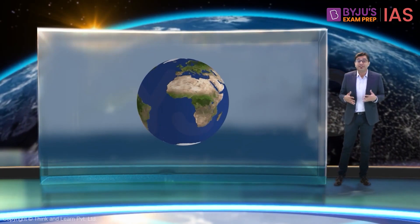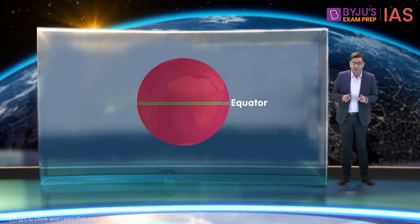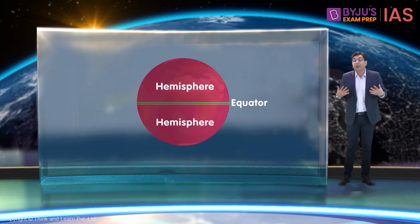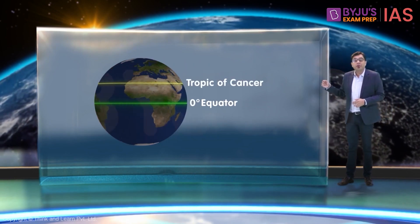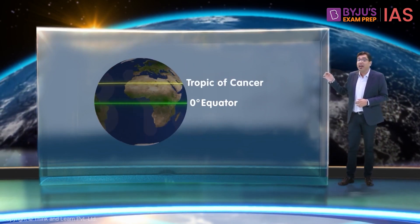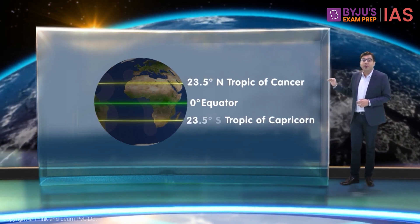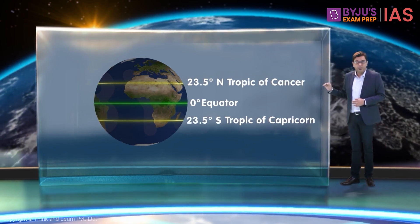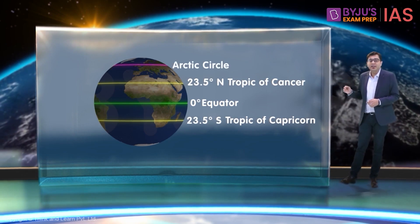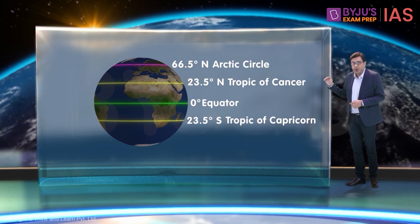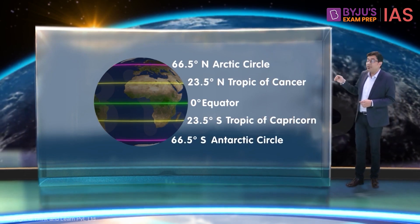There are a few significant latitudes. The equator divides the earth into two halves, each half called a hemisphere. We have two other parallels of latitudes: the Tropic of Cancer in the northern hemisphere at 23.5 degrees north latitude, and the Tropic of Capricorn at 23.5 degrees south latitude. Additionally, there is the Arctic Circle at 66.5 degrees north latitude and the Antarctic Circle at 66.5 degrees south latitude.